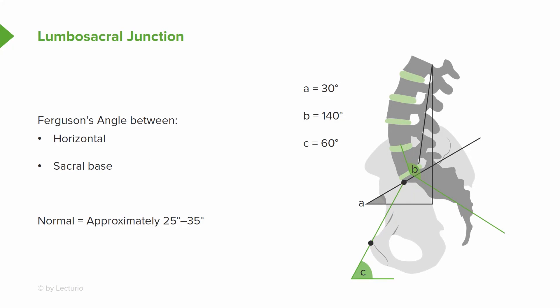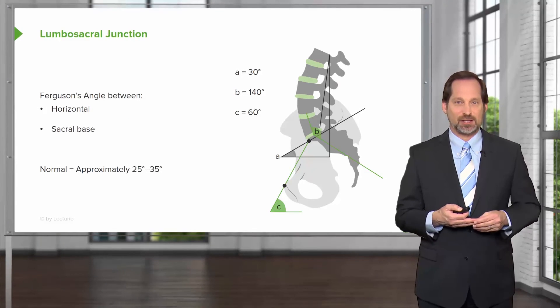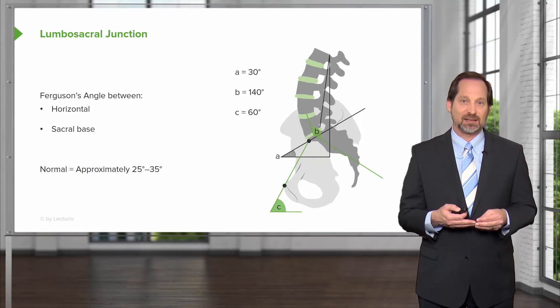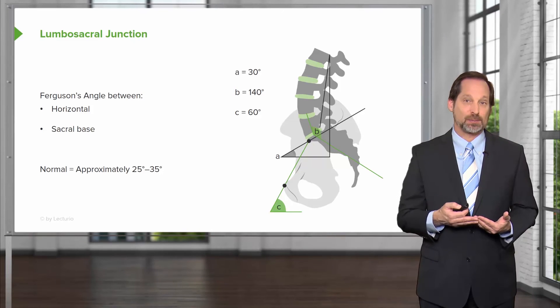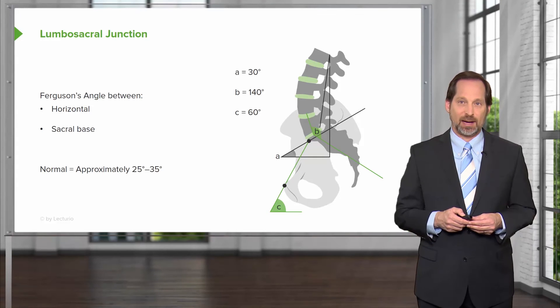The lumbosacral junction — the angle between L5 and S1, also called Ferguson's angle — is important. If it's less than 25 degrees or more than 35 degrees, you have to worry about increased pain and connection issues. A greater angle produces increased lumbar lordosis and impairs smooth function. If it's between 25 and 35 degrees, it decreases suspicion for lumbosacral pain. If it's greater, you worry more about spondylolisthesis, spondylolysis, and other abnormalities.